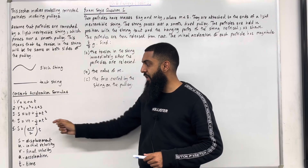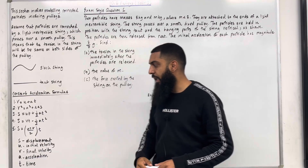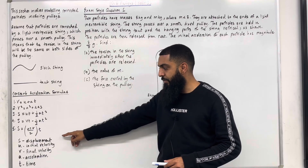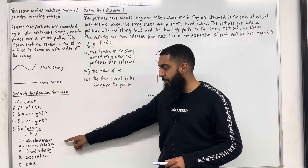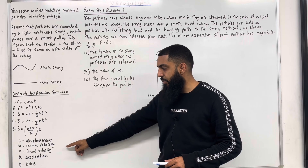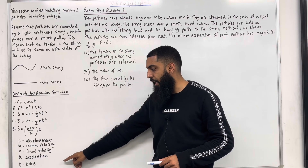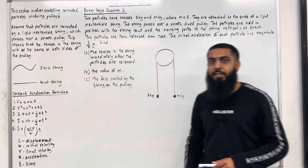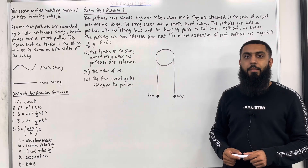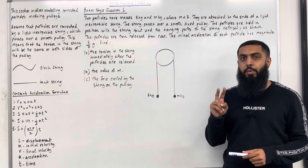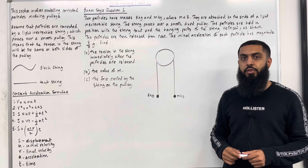Here are the constant acceleration formulae — we have SUVAT. S represents displacement, U represents initial velocity, V represents final velocity, A represents acceleration, and T represents time. These are the key facts of 10.6 Pulleys. I'll be implementing these key facts within two exam style questions.